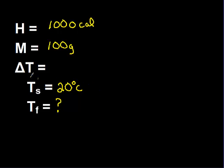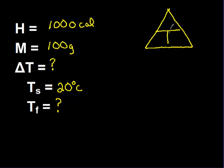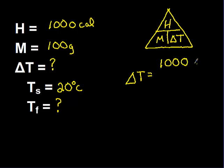When dealing with starting or final temperature, we first need to solve for delta T, so I'll put a question mark there as well. Going back to the pyramid: heat on top, mass and change in temperature on the bottom. Covering up delta T, I know delta T equals heat over mass. Plugging in values: change in temperature equals 1,000 calories — written as grams degrees Celsius — on top.